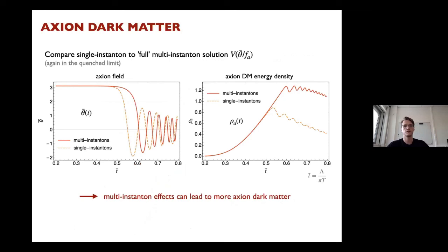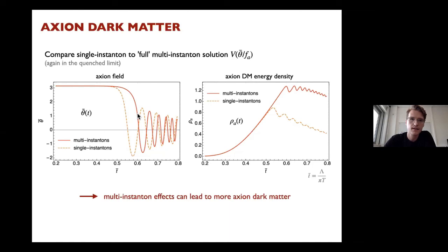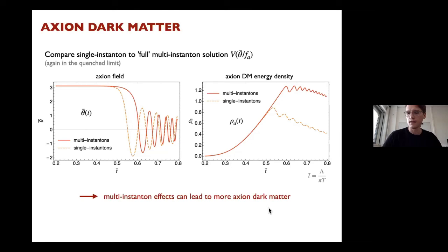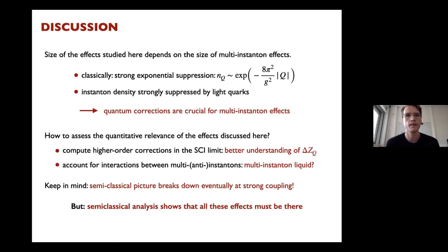Choosing an initial value close to the maximum for illustration: with multi-instanton effects, the axion enters the underdamped regime later, accumulates more potential energy during time evolution, and as a result can yield more axion dark matter compared to single-instanton effects. The orange potential is from single instantons; the modified one is from multi-instantons. This is a neat mechanism for enhancing the axion dark matter energy density.